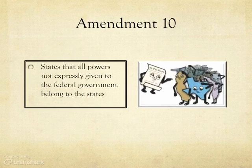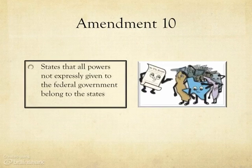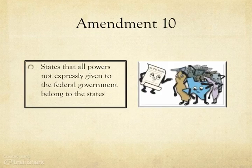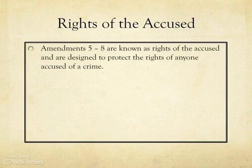Last, but certainly not least, Amendment 10 states that the powers not expressly given to the national government by the Constitution belong to the states. This was put in place to limit the power that the federal government could have and in the process contributed to the growth of federalism in this country. Federalism is a sharing of power between the states and the federal government. Remember, Amendments 5 through 8 are known as the rights of the accused and are designed to protect the rights of anyone accused of a crime.